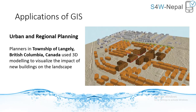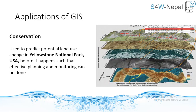Now let's see some real-time examples of GIS. Urban and regional planners in the township of Langley, British Columbia, Canada have used 3D modeling to visualize the impact of new buildings on the landscape using QGIS. For example, in Yellowstone National Park, USA, conservationists and scientists are using GIS to predict potential land-use change, such that before the land pattern changes, some planning can be done. So these were the applications of GIS.